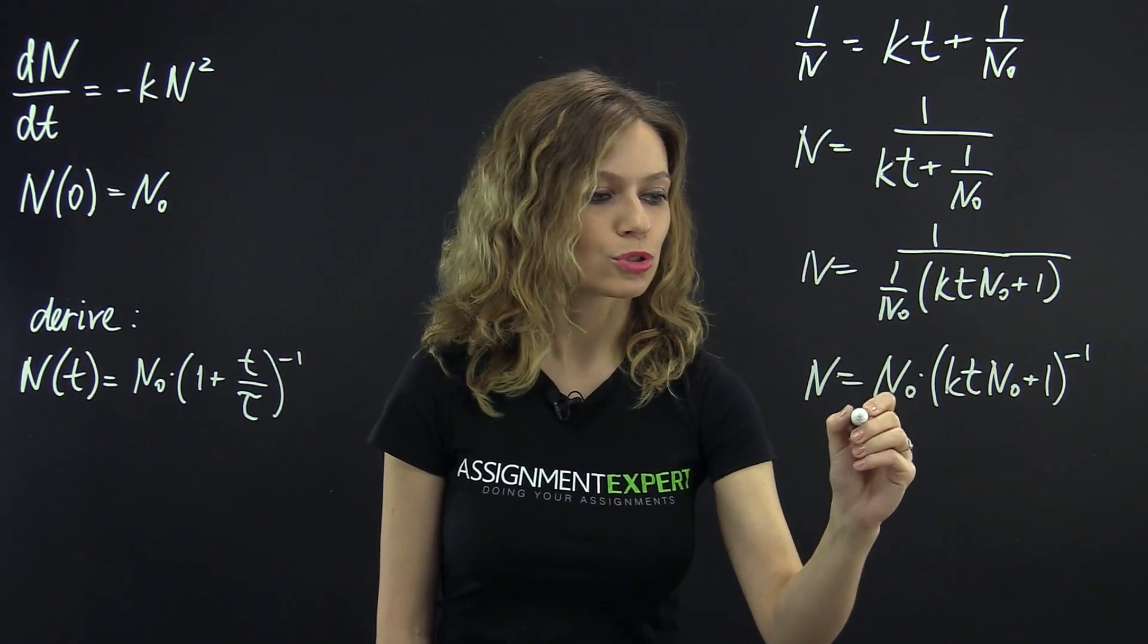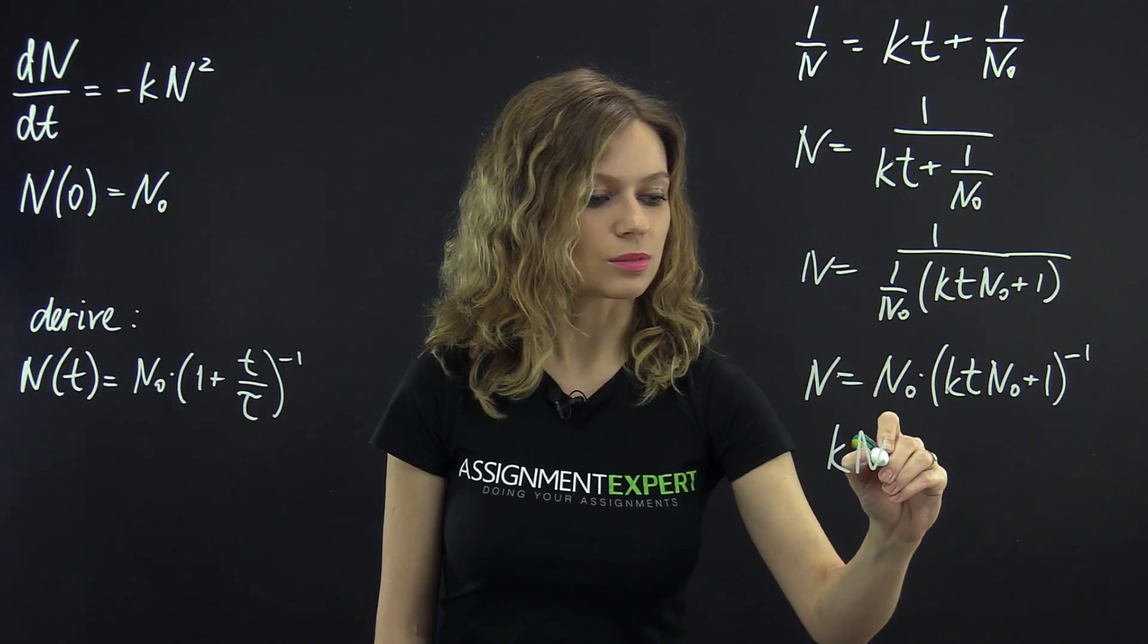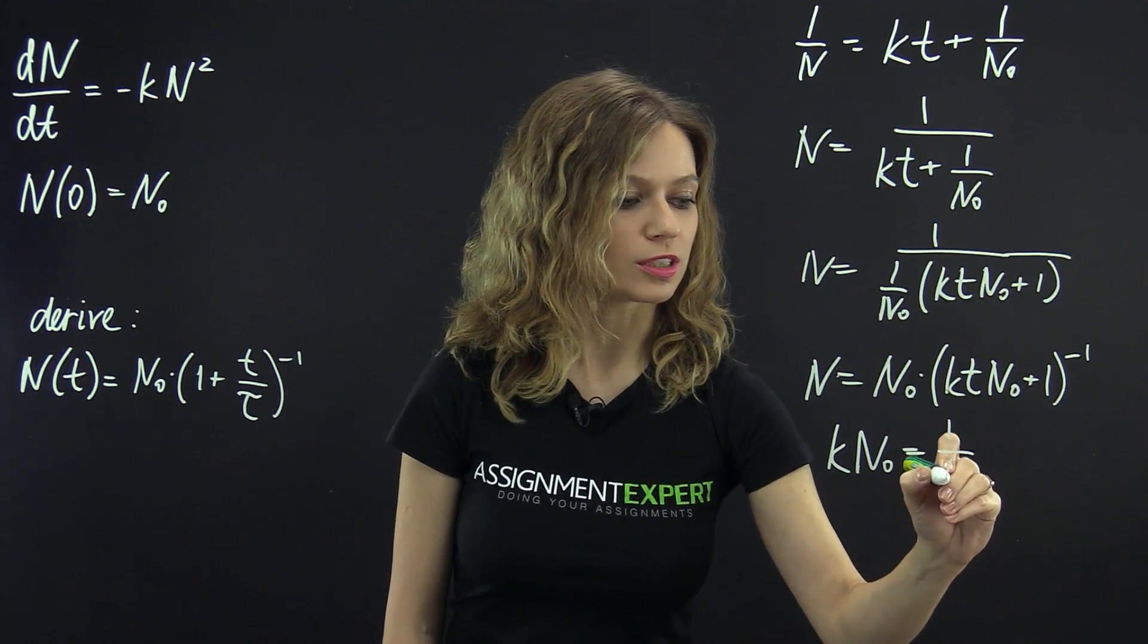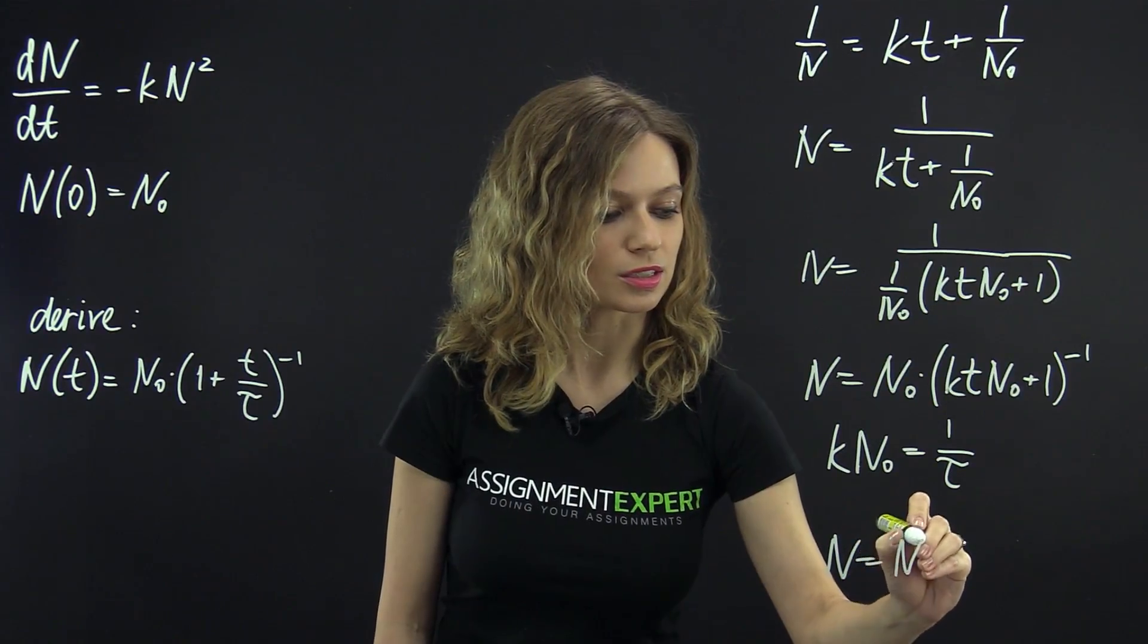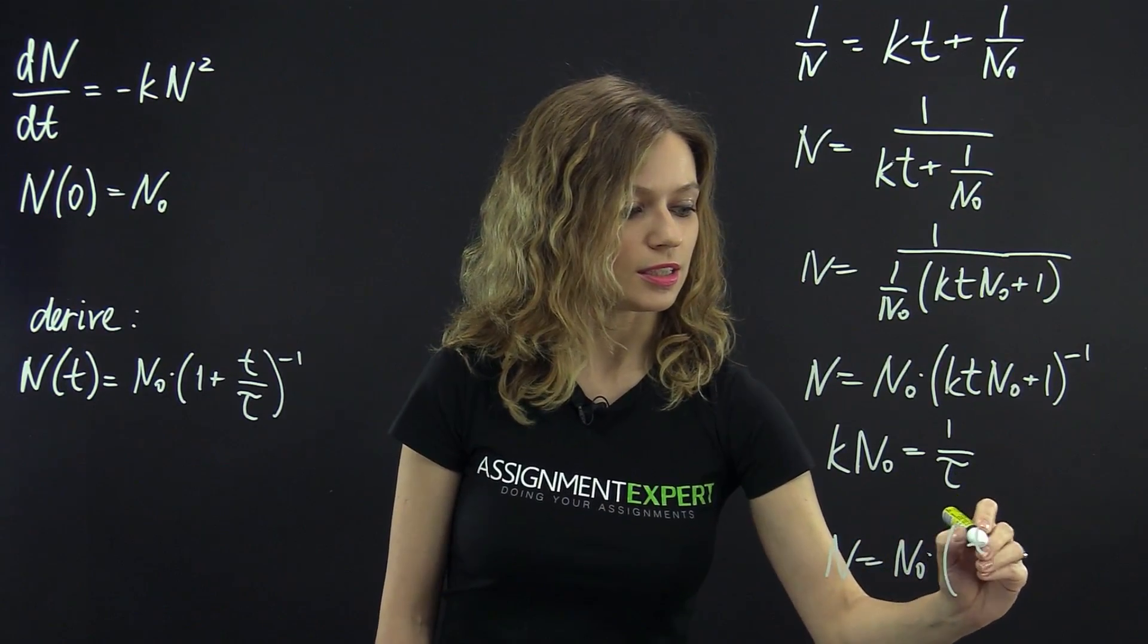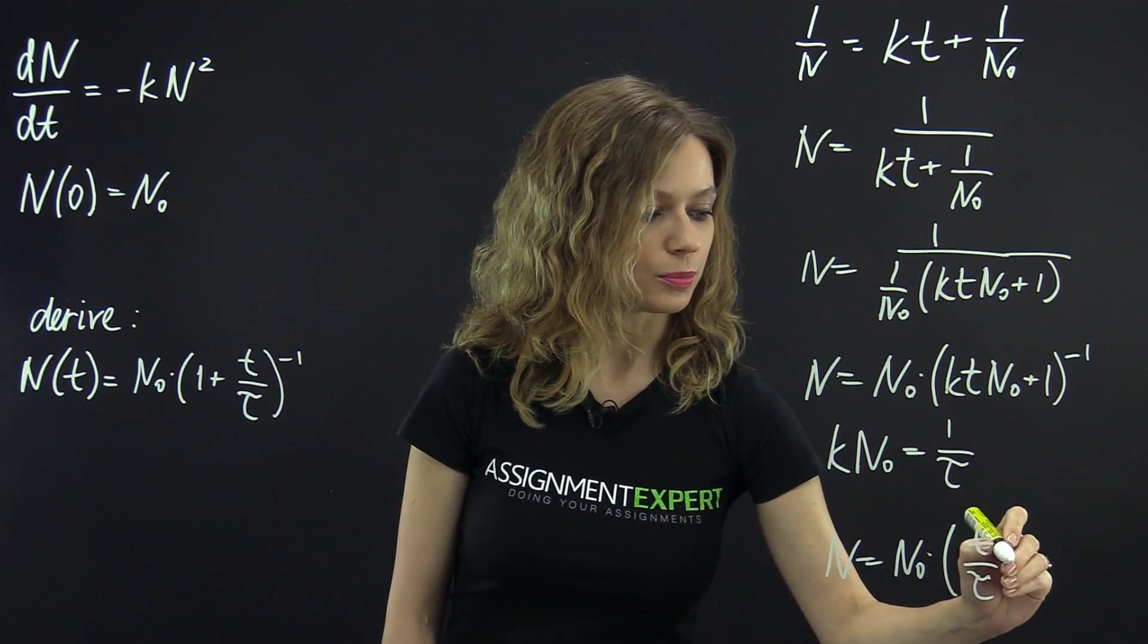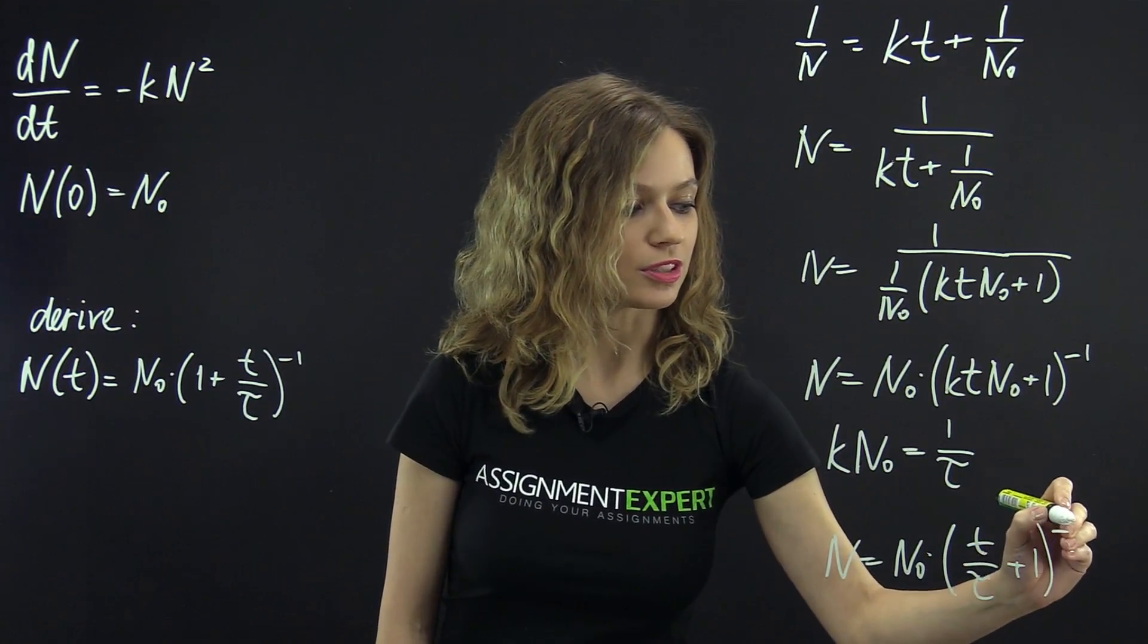And then, we'll have N equals N sub 0. If we make a substitution k times N sub 0 equals 1 over tau, we'll have that N is equal to N sub 0 times t over tau plus 1 to the power of negative 1.